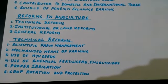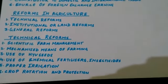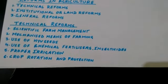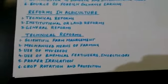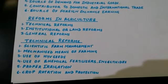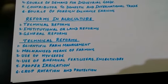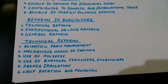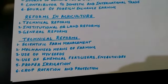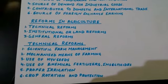Technical reforms means introducing modern scientific methods of farming. The first reform is scientific farm management — how farming can be done in a scientific way. Then, mechanized means of farming, to introduce modern machines. Next is the use of HYV seeds, or improved varieties of seeds, which will yield good results or give good production.